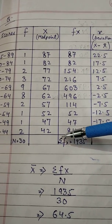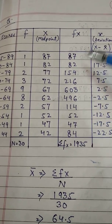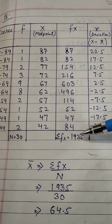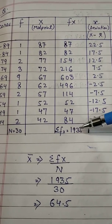Yahaan par aapke paas aagya sigma fx. Sigma means total hoota hai. Toh fx ka total aagya. This is 1935.